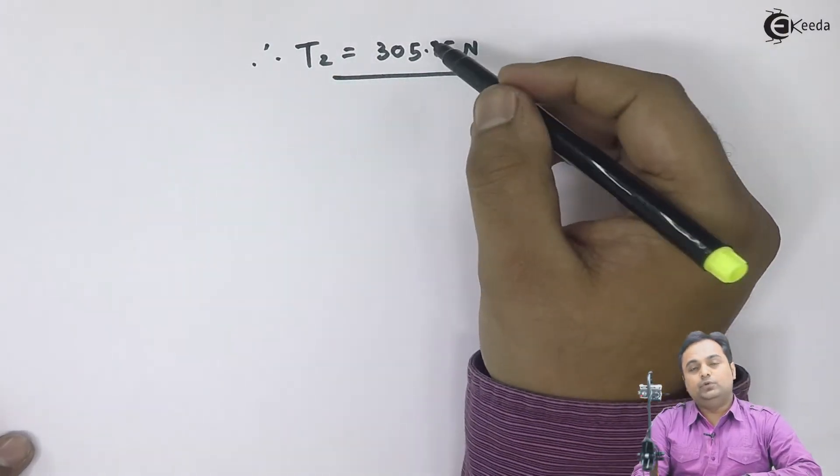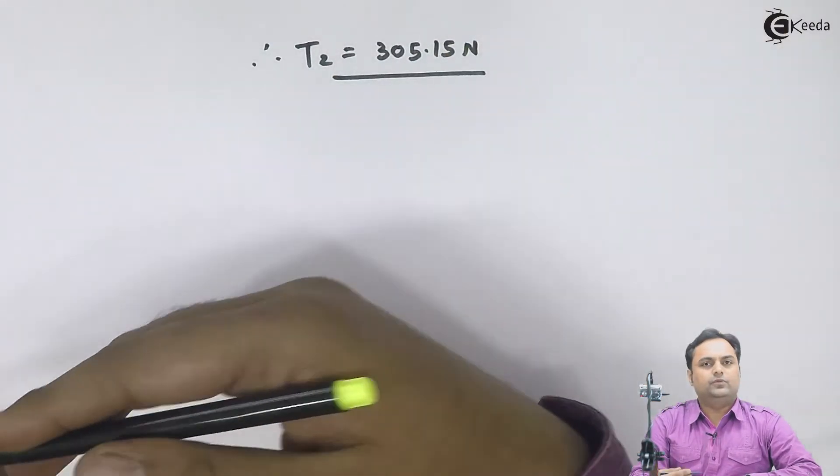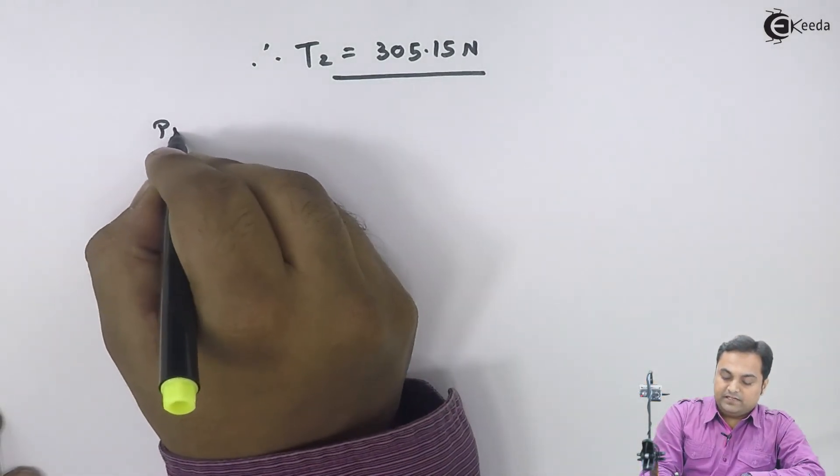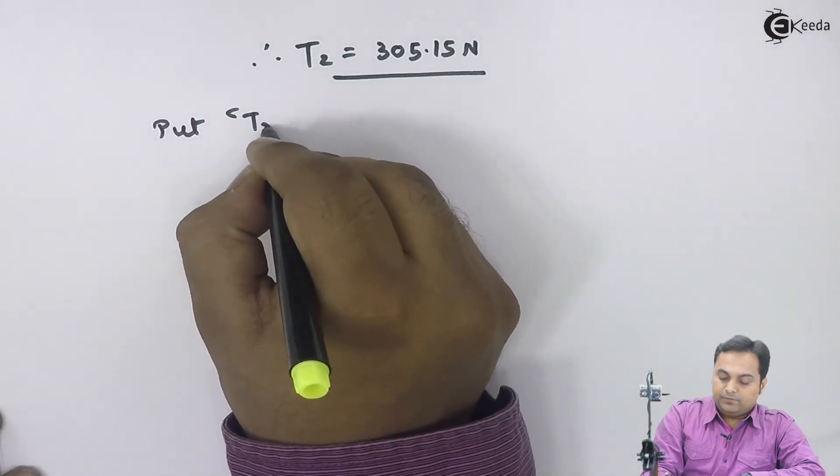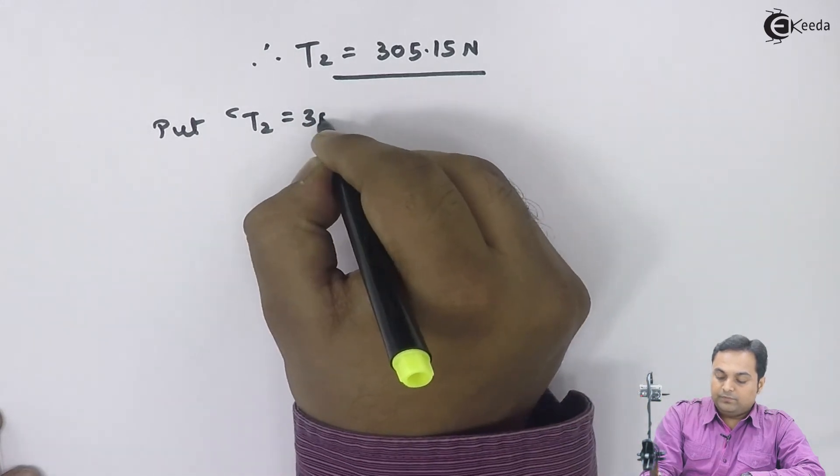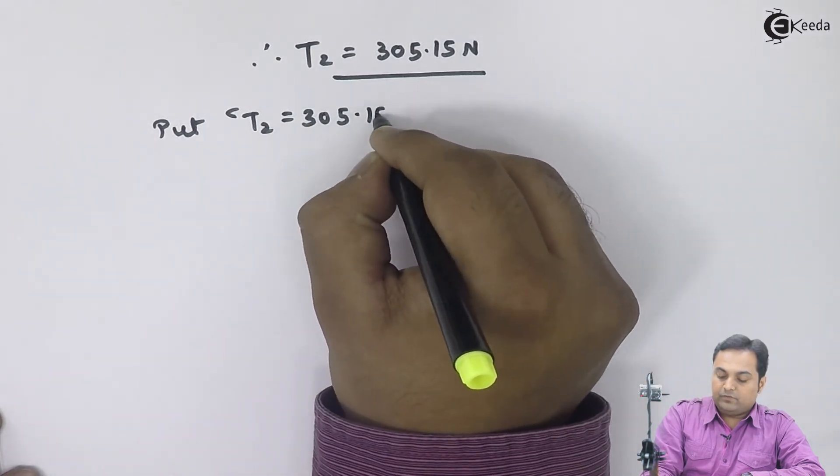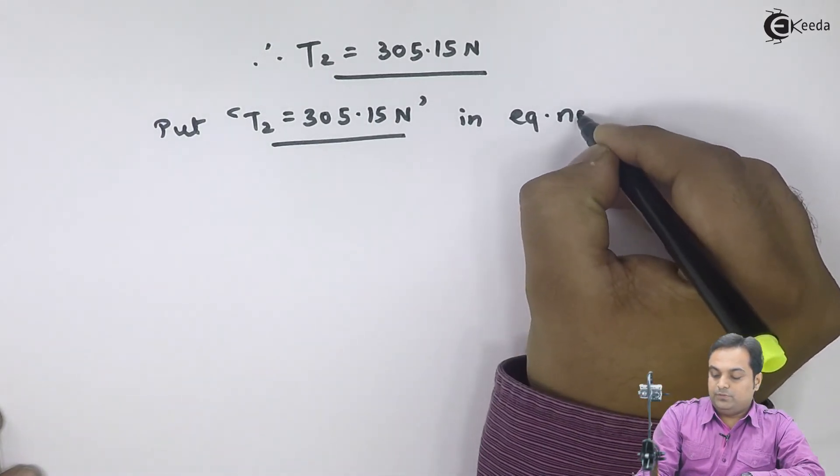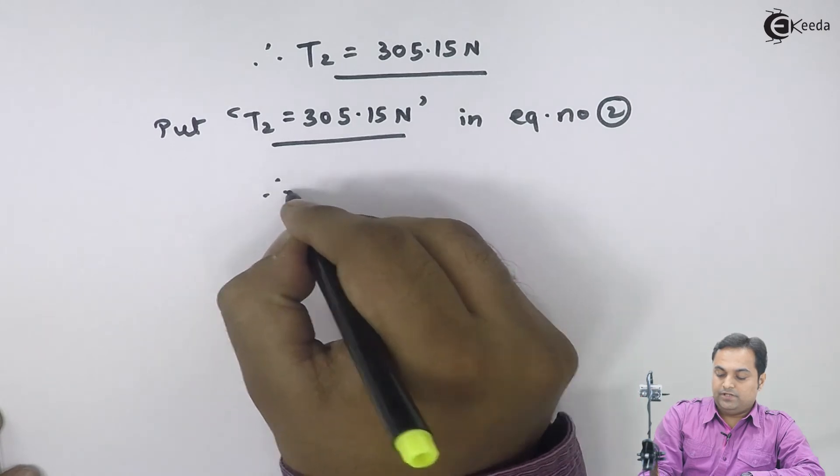After getting T2 I will put the value of T2 in equation 2 to get the answer of T1. So I will say that put T2 equals 305.15 Newtons in equation number 2.